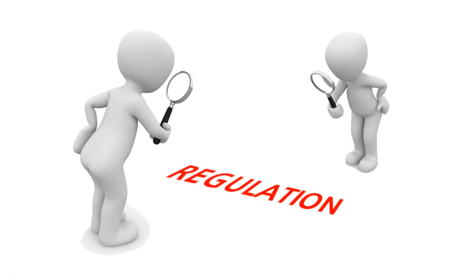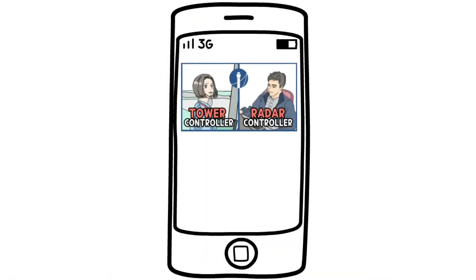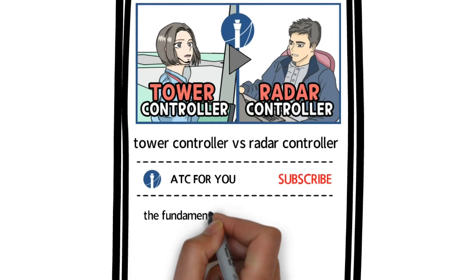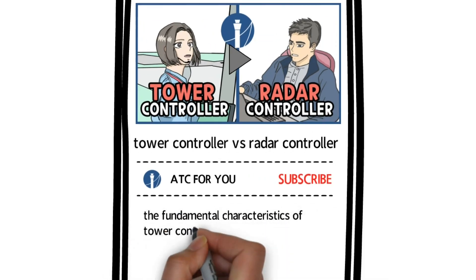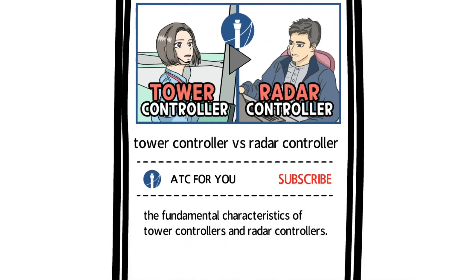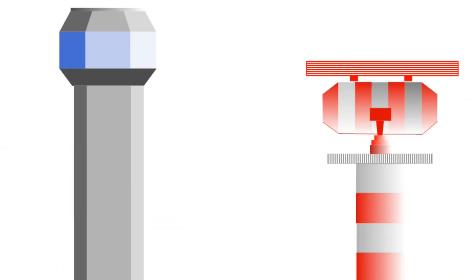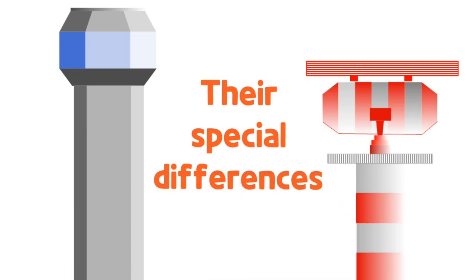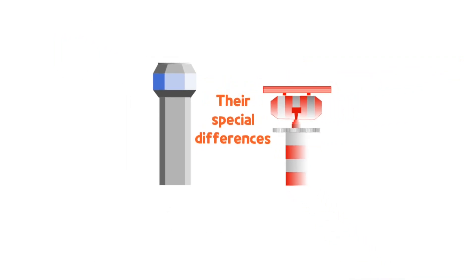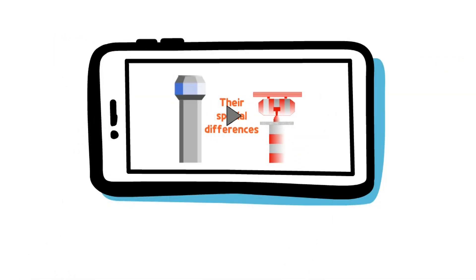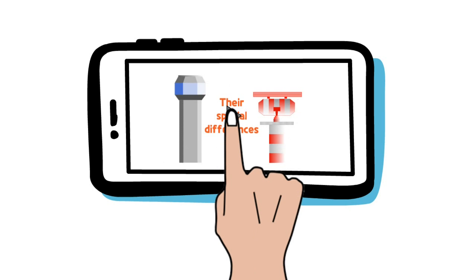Different interpretations of the same regulation are also a source of conflict. In the last Tower Controller vs. Radar Controller video, we looked at the fundamental characteristics of tower controllers and radar controllers. In this video, let's go a step further and see how differently they accomplish their tasks. Please watch this fully so our warm message can be delivered into your hearts.